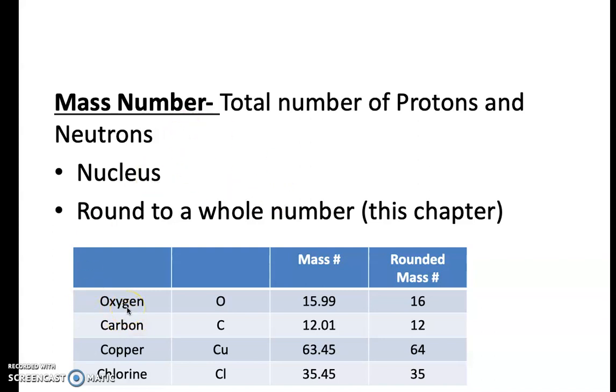So for oxygen, if we look at oxygen, we're going to see that the mass number on the periodic table is 15.99, so we're going to round that to 16. Carbon is 12.01, we're going to round that to 12. Copper is 63.45, we will round that to 64. And chlorine, it's a little tricky. We're going to round this one to 35. Possibly for the honors class, there might be an assignment that you have to use 35.45, but right now, we're just going to round it to 35.